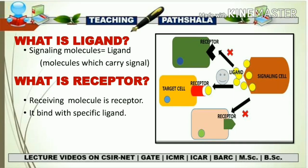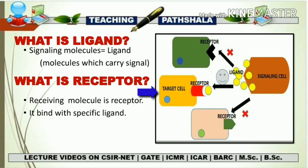The binding of ligand and receptor is very specific. If you see the figure in front of you, you can see there are three cells and a single signaling cell. The signaling cell is secreting a signaling molecule in the form of a ligand, and all three cells in the environment have some kind of receptor on their surface. Only the target cell, which has a specific receptor, is capable of receiving the ligand. If you see the shape of the receptor, the ligand fits very well with that receptor, but it does not fit with the receptors of the other two cells.